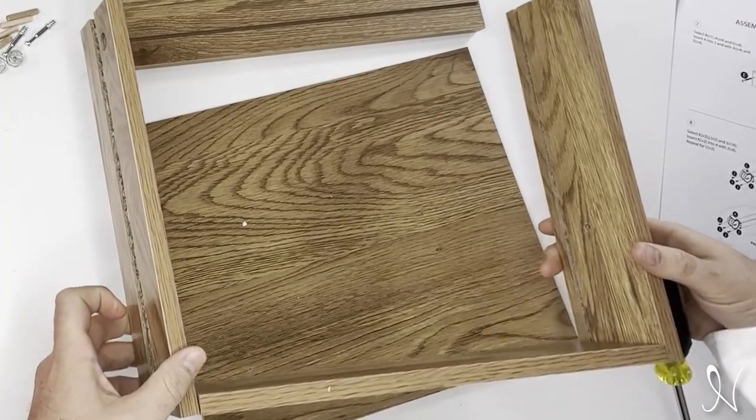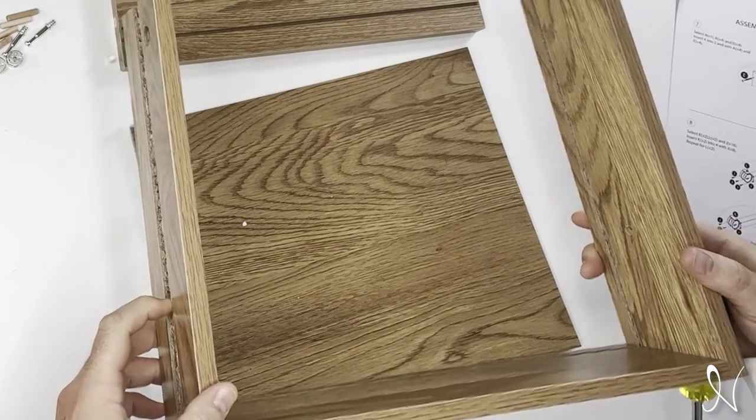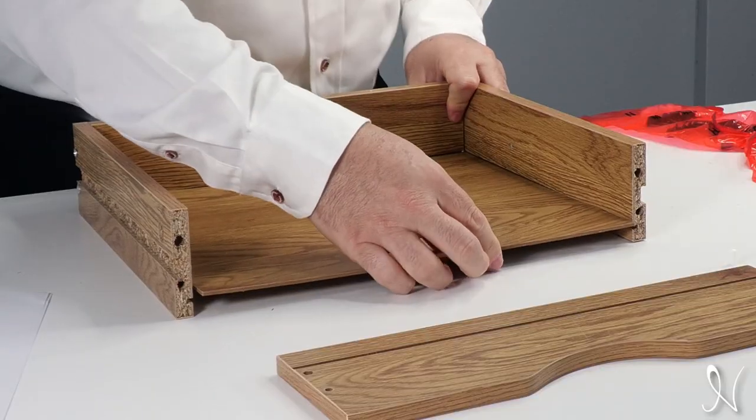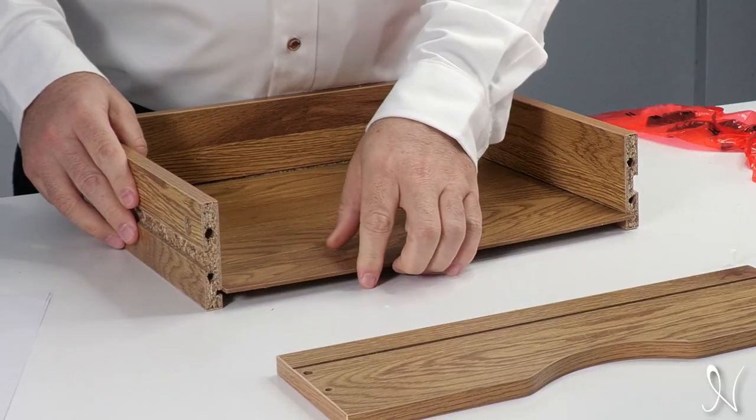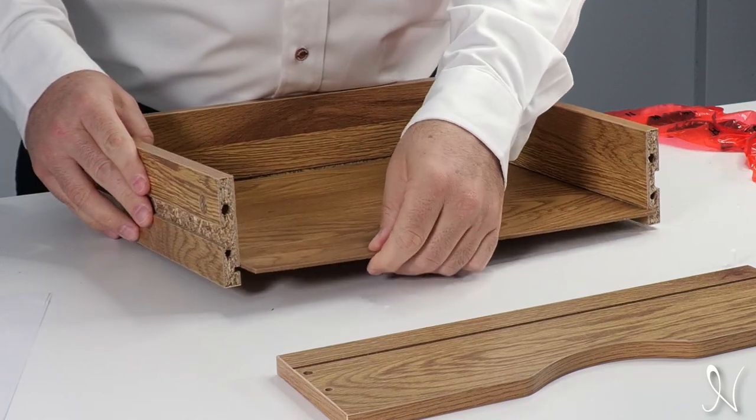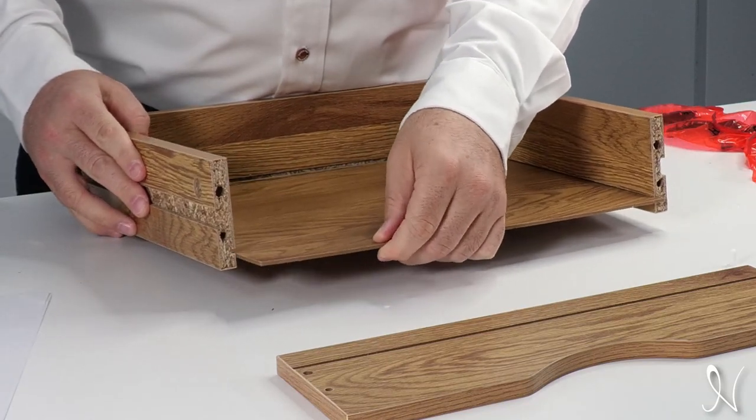Now we've got both side panels onto our back panel with a little bit of slack in it. From there we'll take our bottom panel, and you'll want to make sure that you have the nice painted side face up.